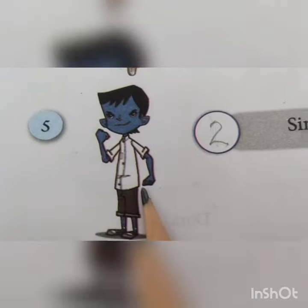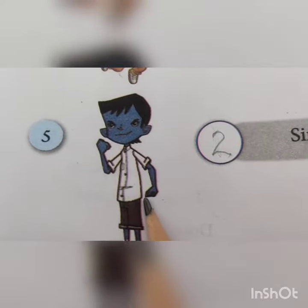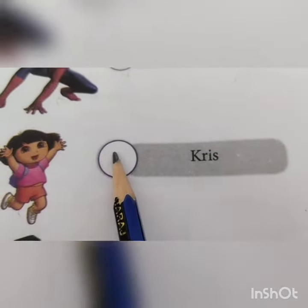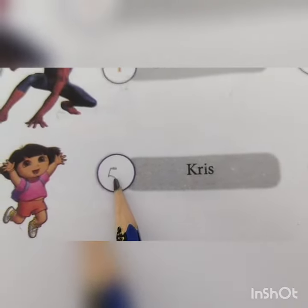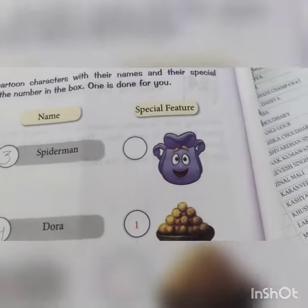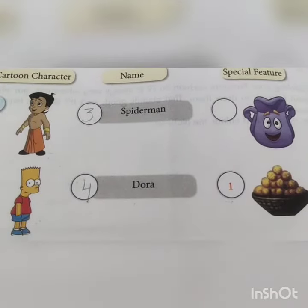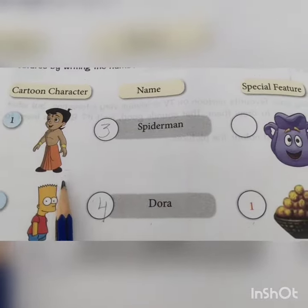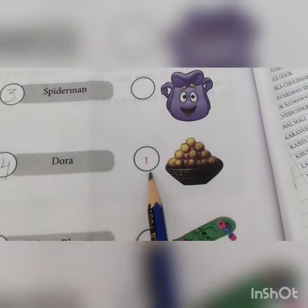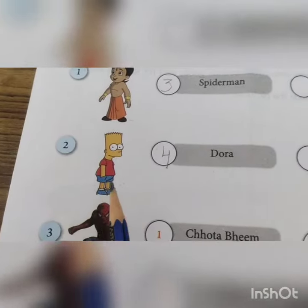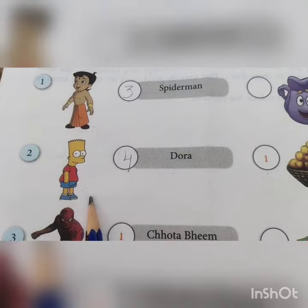The fifth one — which cartoon character is this? Chris! And it is written here, so we will write number five. Now children, we will write the special features also. Number one is Chota Bean, and the special feature is teddy — this one is already written here. Now the second one is Simpson.